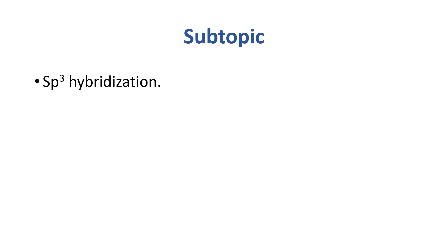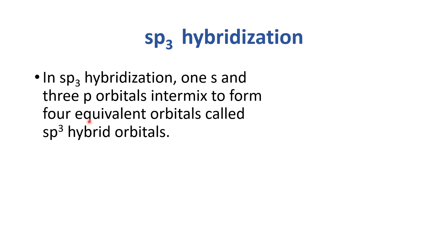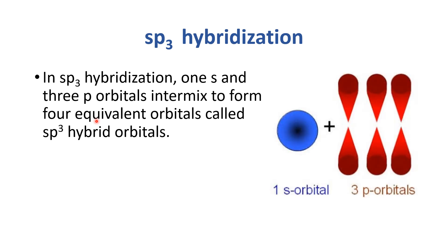The topic we are going to discuss is chemical bonding, and the subtopic is sp³ hybridization. In sp³ hybridization, one s and three p orbitals intermix to form four equivalent orbitals called sp³ hybrid orbitals.